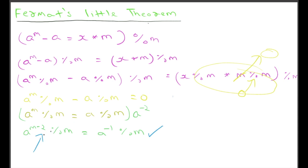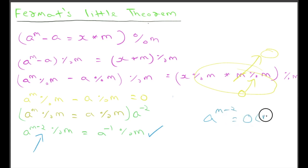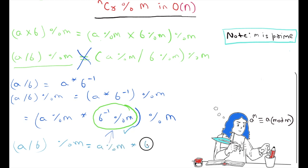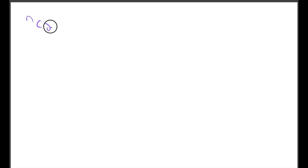A to the power M minus 2 can be calculated in O(M). So A divided by B modulo M equals A modulo M multiply B to the power M minus 2 modulo M, all modulo M. Now let's see how to calculate NCR modulo M.